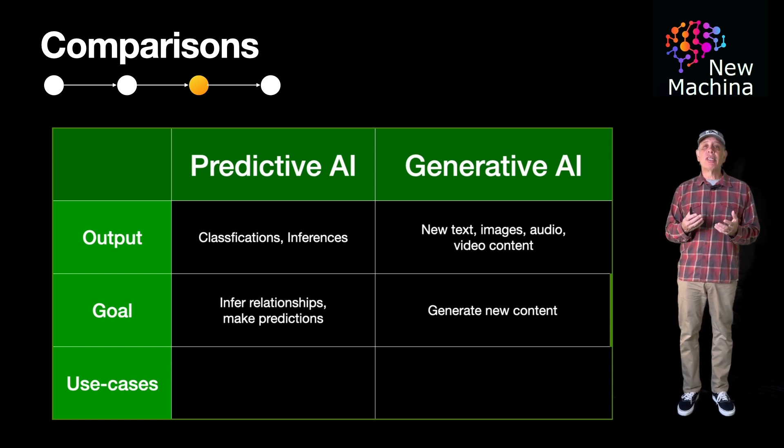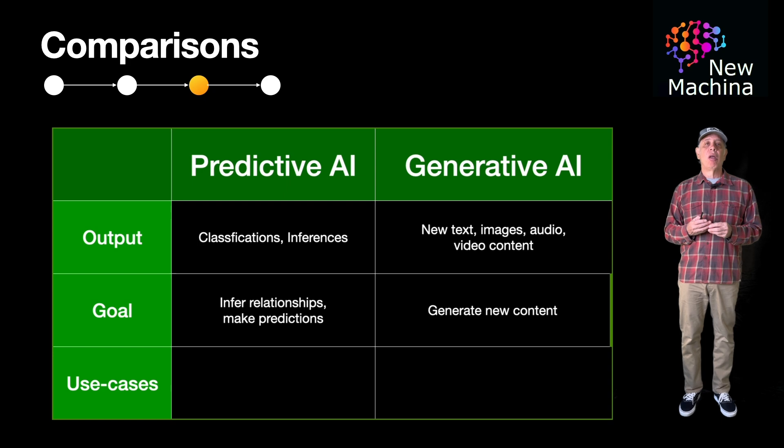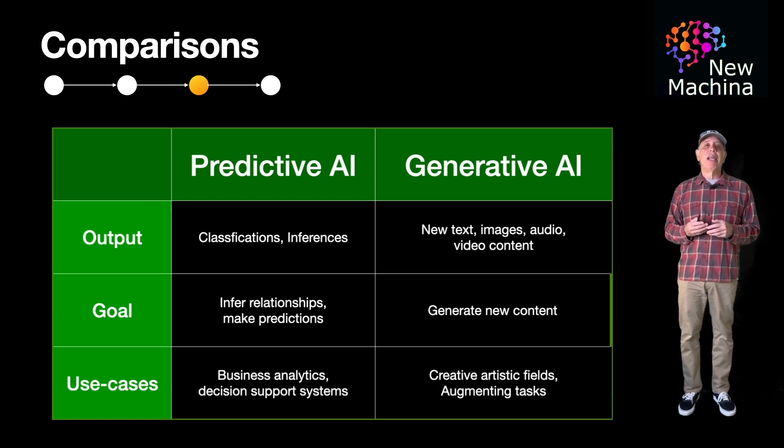What are common use cases for predictive AI? Well, predictive AI is commonly applied in business analytics and decision support systems. Alternatively, Gen AI is often used in creative fields, artistic endeavors, and data augmentation workloads.